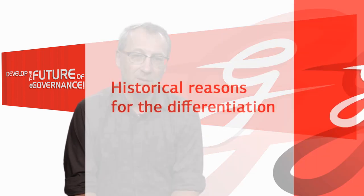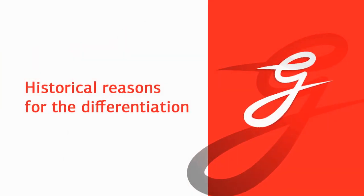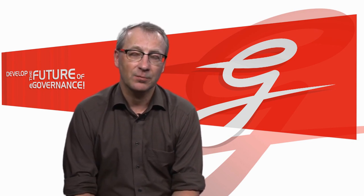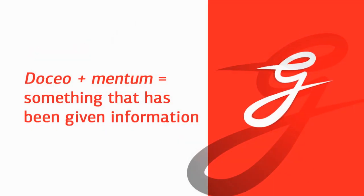There is a historical development of why and how this differentiation was made. First of all, if we look at the etymological side of these two terms, we look at the word 'document'. Document comes from the Latin root 'doceo' plus the suffix '-mentum', which means something which gives information.